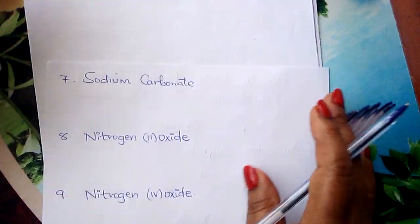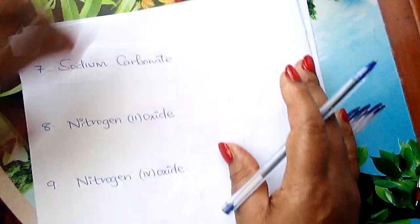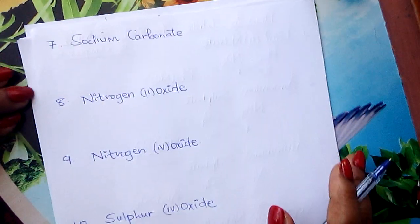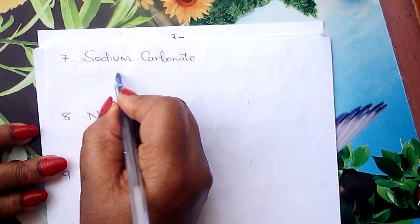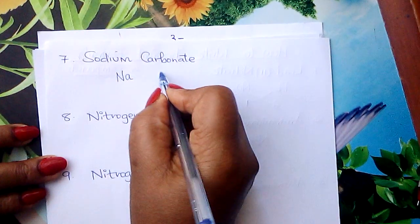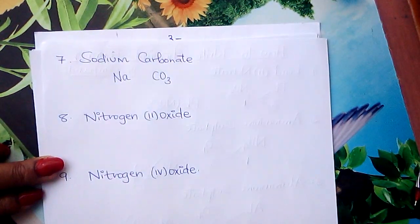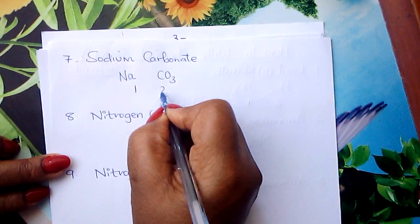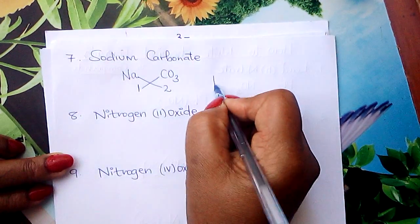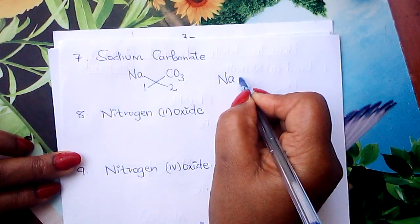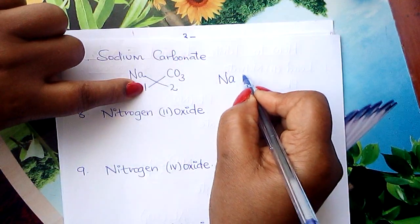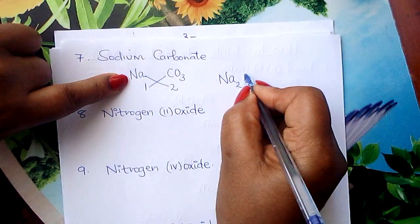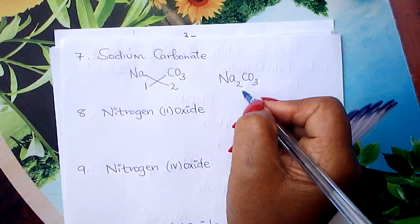We go to sodium carbonate. Sodium symbol is Na, carbonate is CO₃. Sodium valency is 1, carbonate valency is 2. Interchange: sodium takes 2 — write Na₂ — carbonate takes 1. No need of writing 1. So the formula is Na₂CO₃.